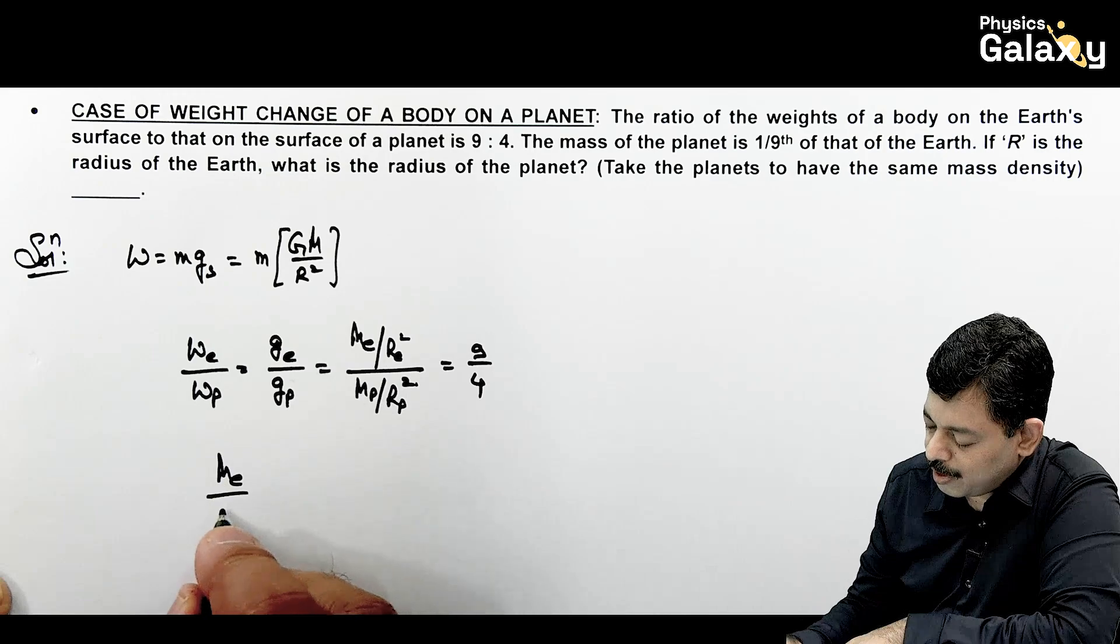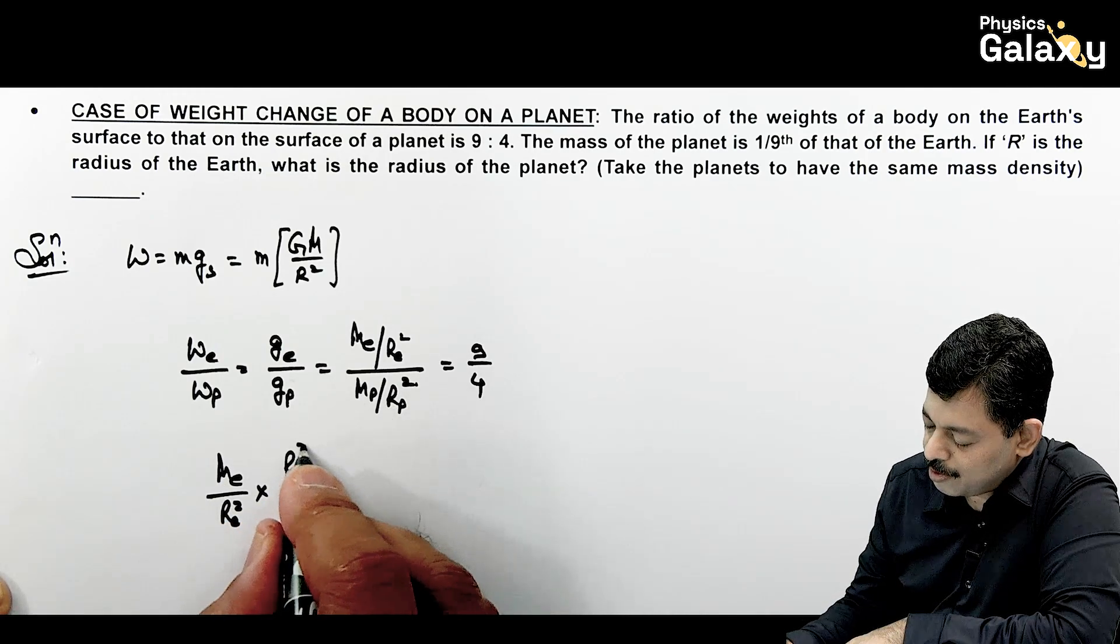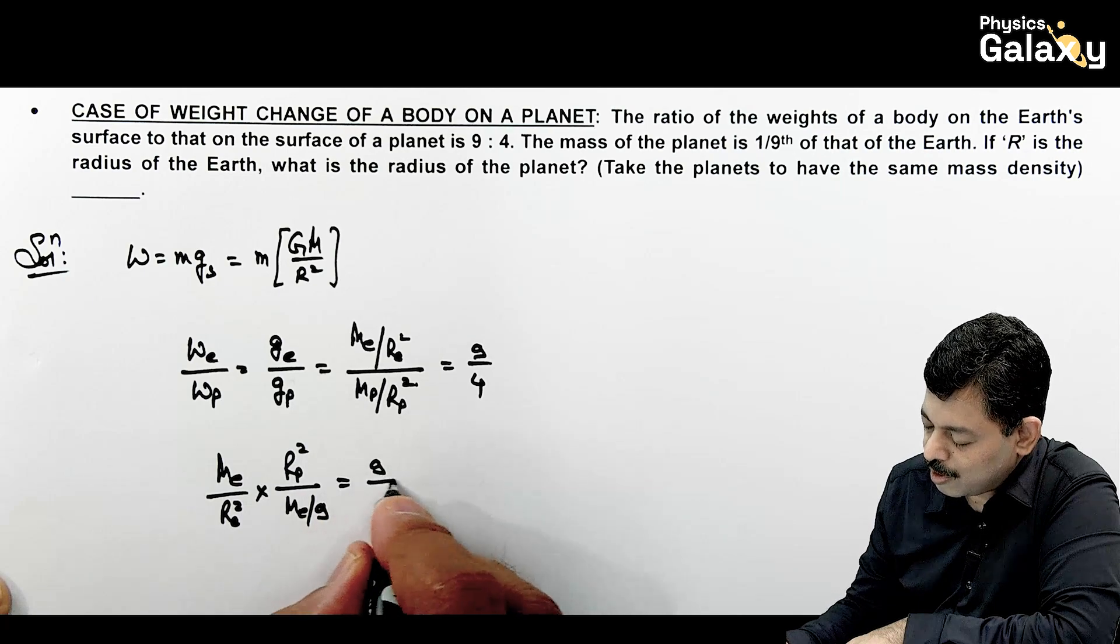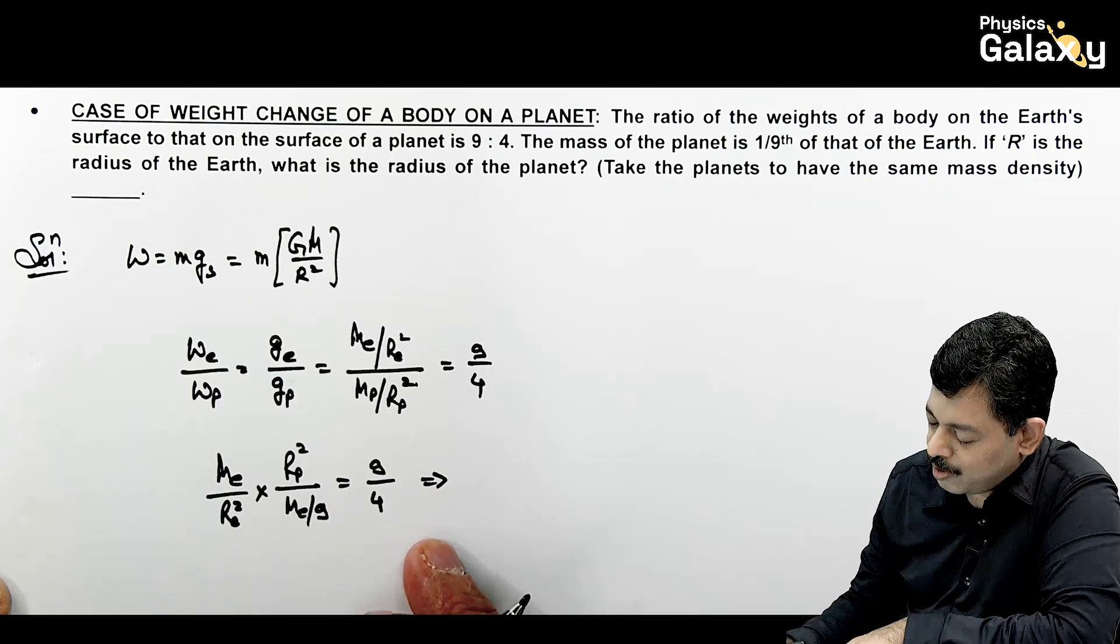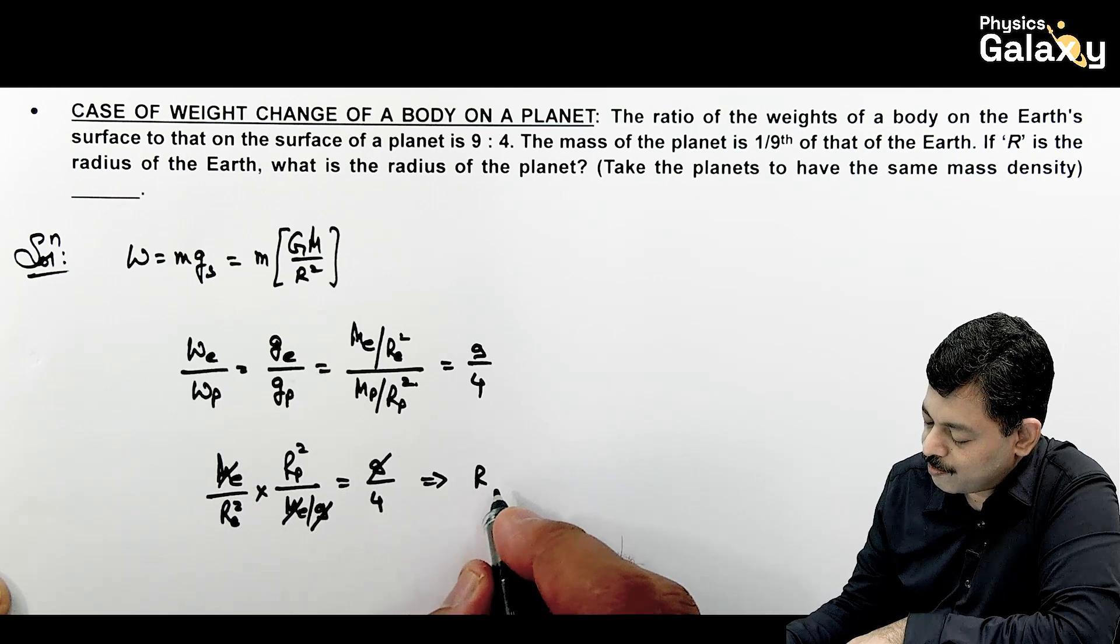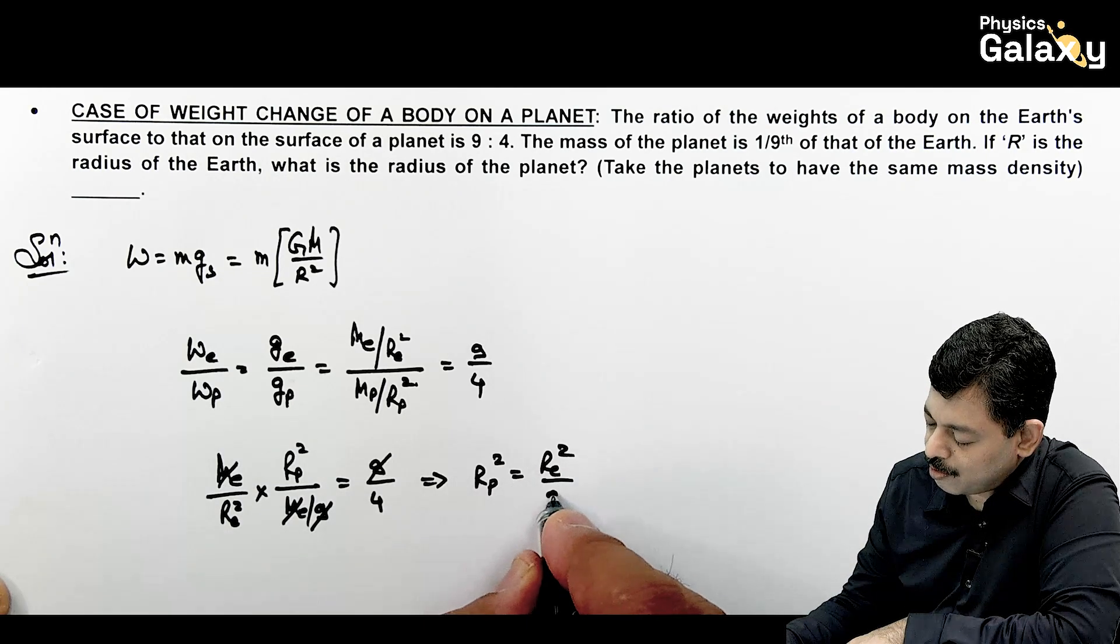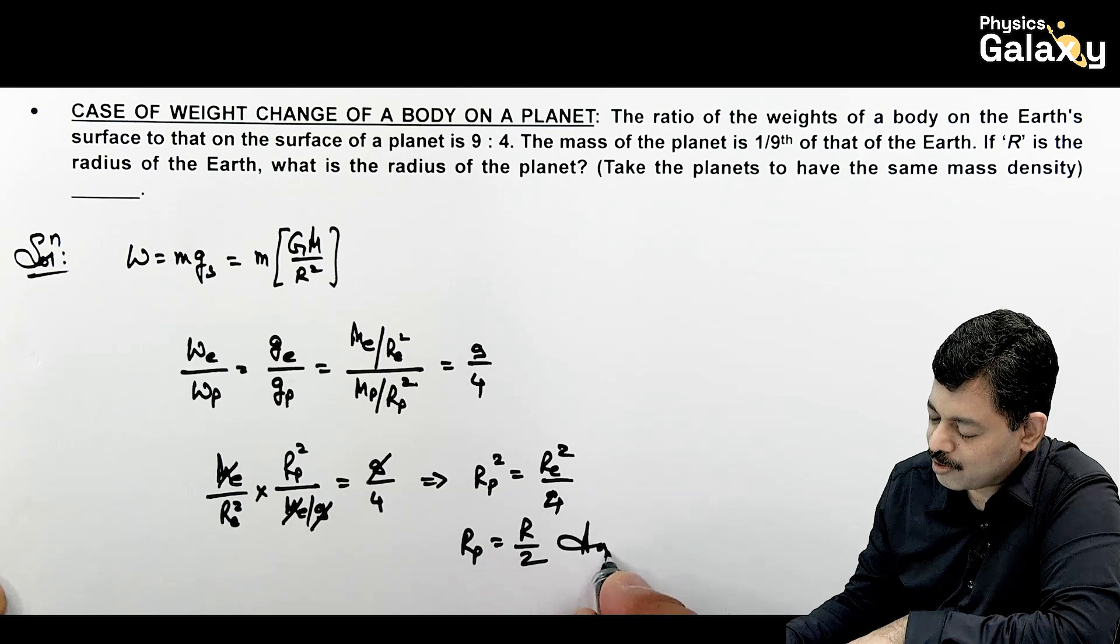We can write me/re² multiplied by rp²/mp. Since mp = me/9, this equals 9/4. The me cancels out, the 9 cancels out, giving us rp² = re²/4. So the value of planet radius equals r/2.